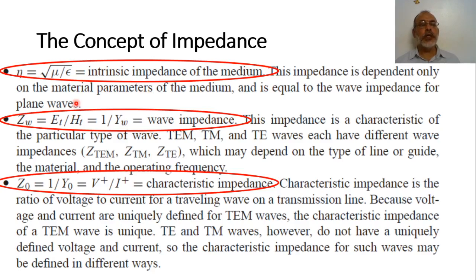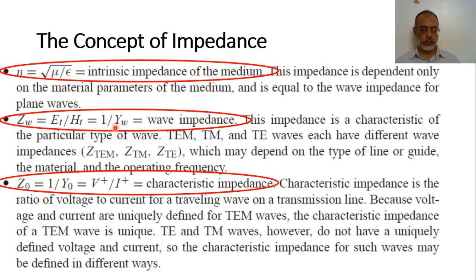Another impedance is the wave impedance in the waveguide. The wave impedance corresponds to the ratio of the transverse electric field component to the transverse magnetic field component, so Z_W equals E_transverse over H_transverse. In terms of the wave admittance, it equals 1 over the wave admittance. This impedance is a characteristic of a particular type of wave — it can be used for transverse electromagnetic, transverse magnetic, or transverse electric waves, and each has a different wave impedance.